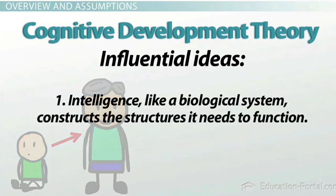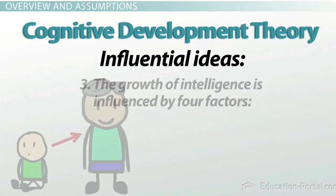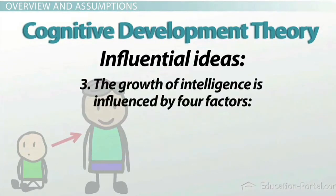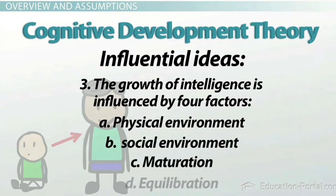The first is that intelligence, like a biological system, constructs the structures it needs to function. Second, knowledge is the interaction between the individual and the environment. And third, the growth of intelligence is influenced by four factors: physical environment, the social environment, maturation, and equilibration.